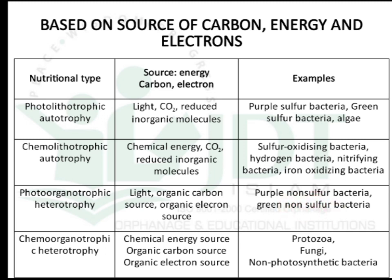The fourth classification is chemo-organotrophic heterotrophs. Chemical energy is the energy source, organic carbon is the carbon source, and organic molecules are the electron source. Examples are protozoa, fungi, and non-photosynthetic bacteria. This completes the classification of microorganisms based on nutritional habit.